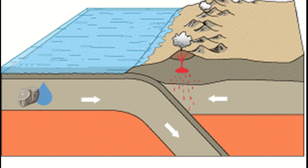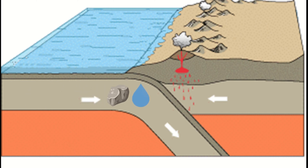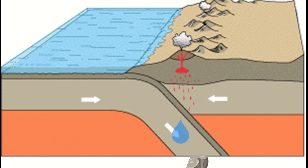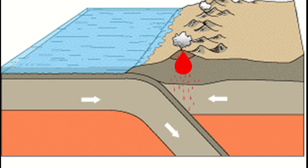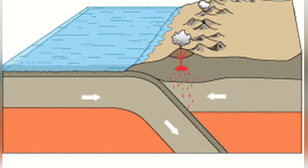As the subducting plate transports water and rock into the earth, the magma mixes with the water and becomes more buoyant, so it rises to the surface and forms volcanoes.